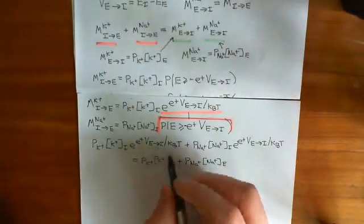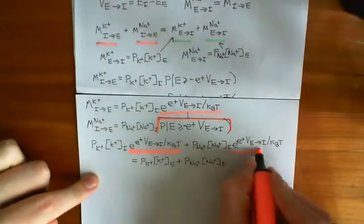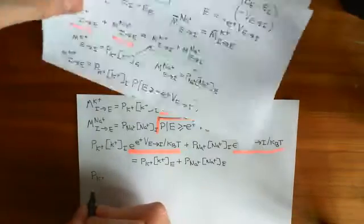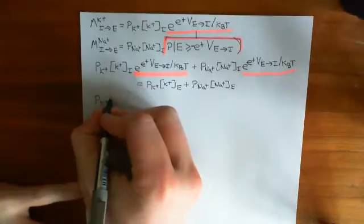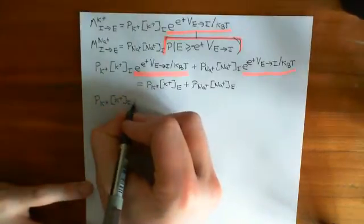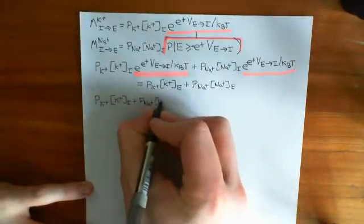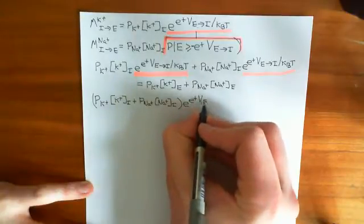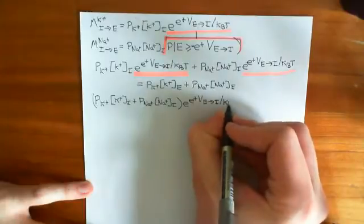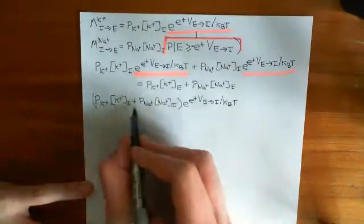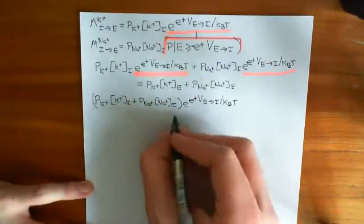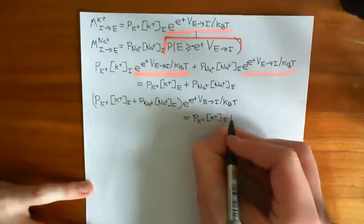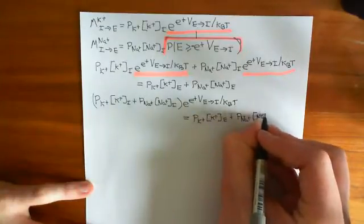Now let's solve for the voltage. First, let's factor out the exponential term from the left-hand side. We get: the permeability of the semipermeable membrane to potassium, times the potassium concentration intracellularly, times e to the power of (e_charge × V_{e→i}) divided by the Boltzmann constant times the temperature — with that bracketed term containing both the potassium and sodium intracellular terms. That should equal the permeability of the membrane to potassium times the potassium concentration extracellularly, plus the permeability to sodium times the sodium concentration extracellularly.